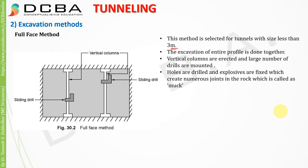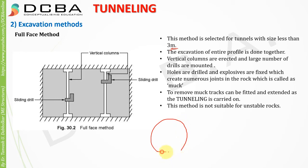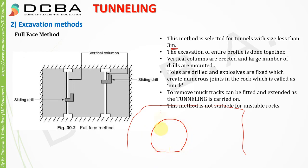After the explosives are placed in the holes and detonated, the resulting debris is called muck. To remove the muck, tracks can be fitted and extended as tunneling progresses. This method is not suitable for unstable rocks, because if you excavate the entire portion at once, the rocks on top of the tunnel lose their support entirely and may collapse inside.